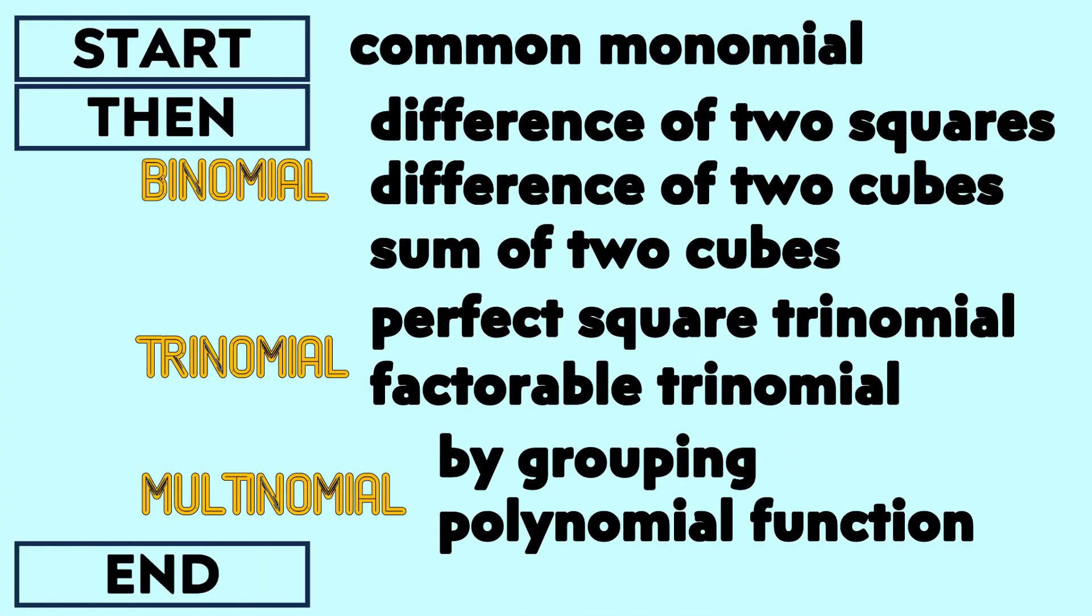Here's the guide for factoring polynomials. We need to start with the common monomial factoring. Then, whatever will be the result, we're going to categorize them as to whether the result is a binomial, trinomial, or multinomial, and we have specific processes under specific results. Then we end it.